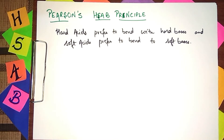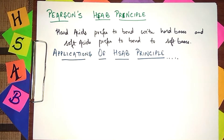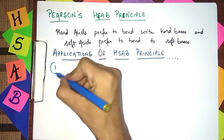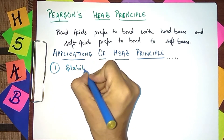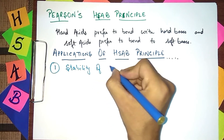The most important part is the applications of this principle — where it is used, what questions are based on it. So let us start with the applications of the HSAB principle. The first application Pearson gave was the stability of complexes.